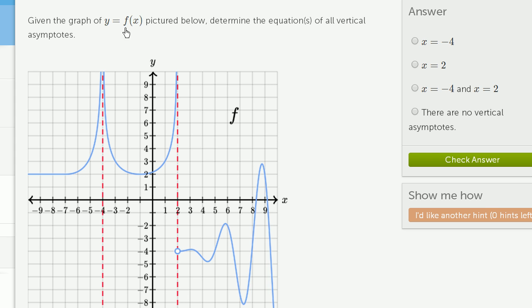Given the graph of y equals f of x pictured below, determine the equations of all vertical asymptotes. Let's see what's going on here. It looks like interesting things are happening at x equals negative 4 and x equals 2.